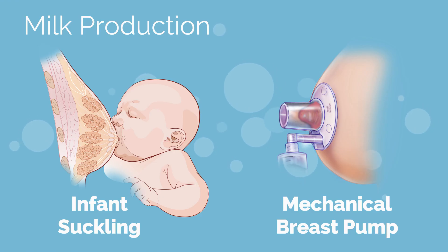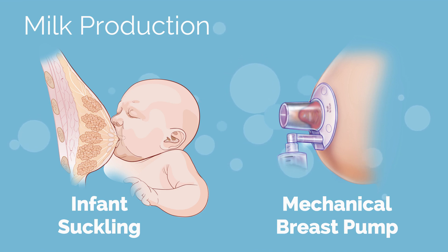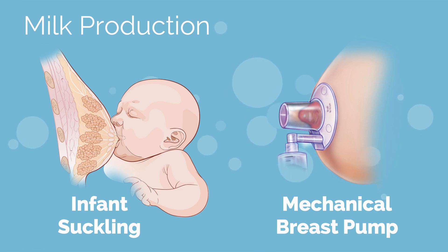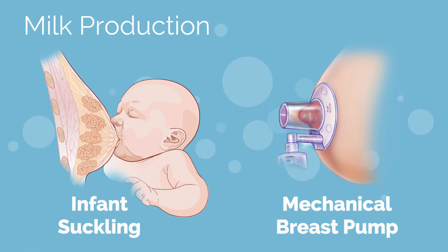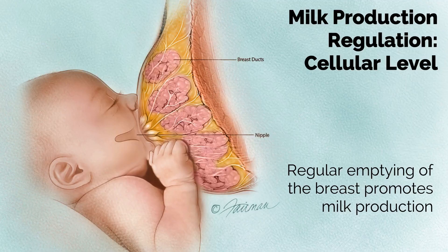Milk synthesis is regulated through a combination of processes. The most important regulatory factor is emptying the breast, either through infant suckling or a mechanical breast pump. Let's focus on the cellular level and how milk production is regulated. To create and maintain a breast milk supply, the breast must be emptied on a regular basis. The frequency with which the breast needs to be emptied and the time needed will vary with each dyad.